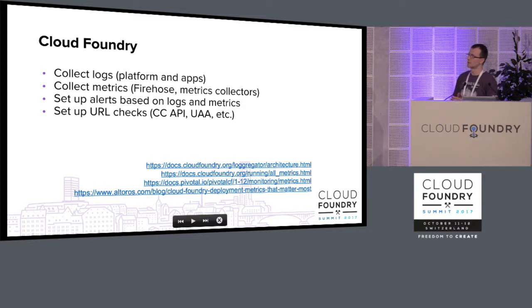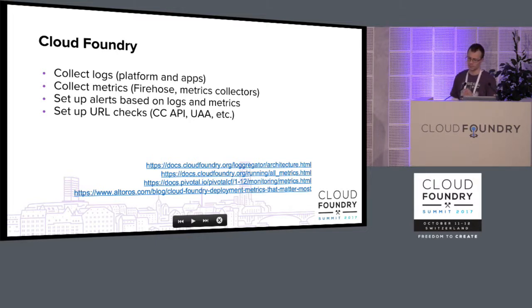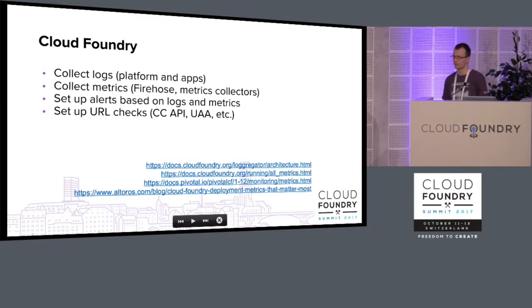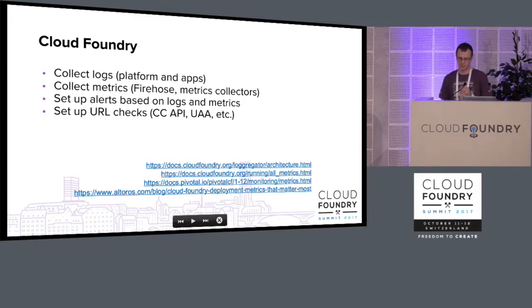You don't need to decide from the start which metrics are relevant or not. You can find a very comprehensive list of valuable metrics and key performance indicators in the Cloud Foundry documentation. I also suggest setting up URL checks — for example, URL checks of the Cloud Foundry API and UAA. It's a simple advice, but it gives you an opportunity to look at your Cloud Foundry deployment from the outside, which is really useful.